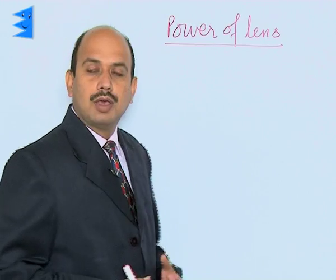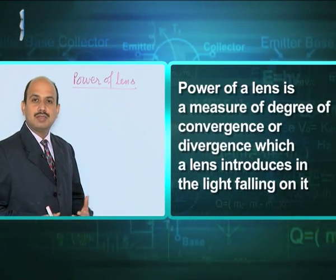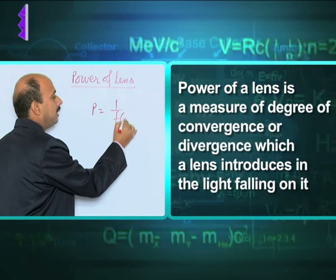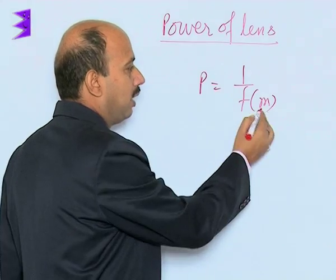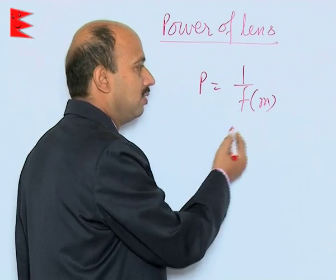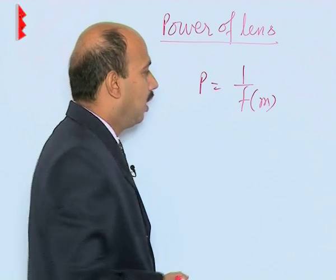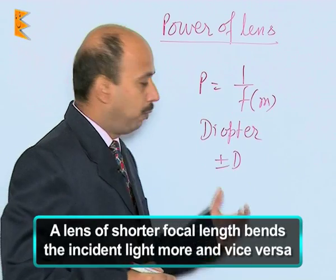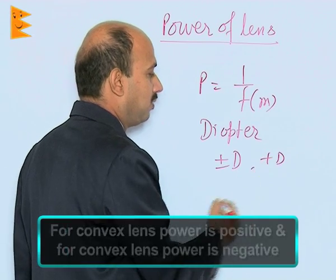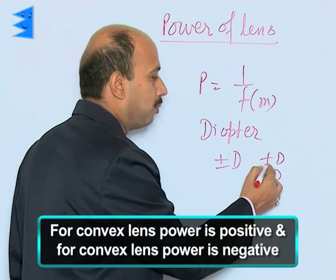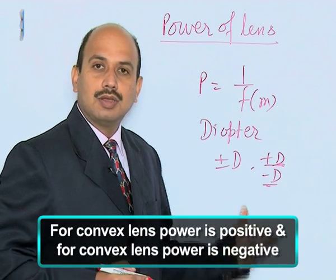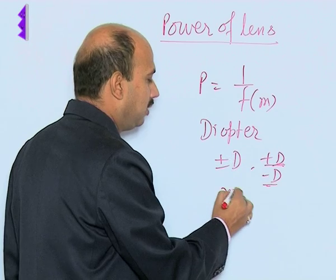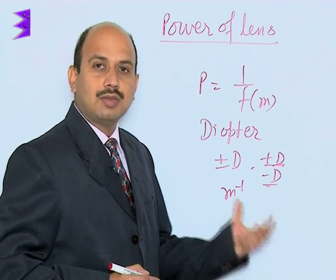Now, the power of a lens. Power of a lens is actually the measure of the degree of convergence or divergence, and it is defined as the reciprocal of focal length in meters. Mathematically, power of a lens equals 1/f (in meters). It is measured in a unit called diopter, written as D. When f is positive, power is +D; when f is negative, it is −D. So for a convex lens power is positive and for a concave lens power is negative. The unit can also be written as m⁻¹.